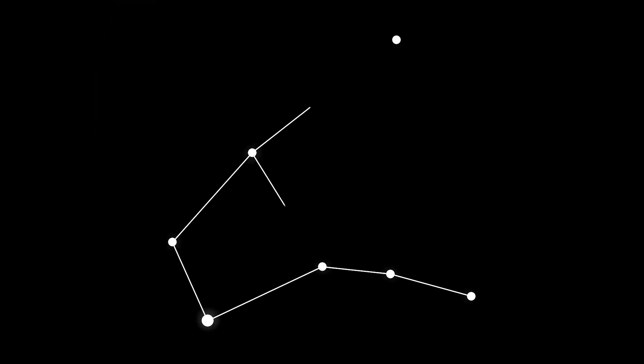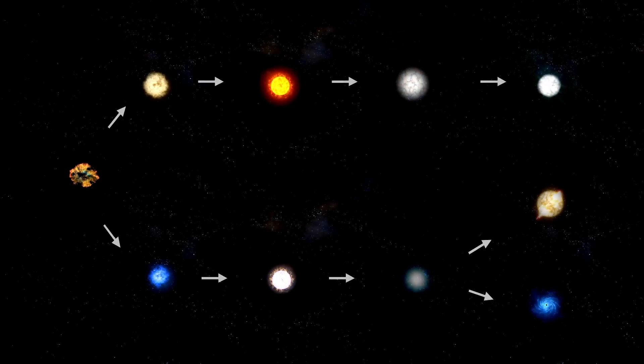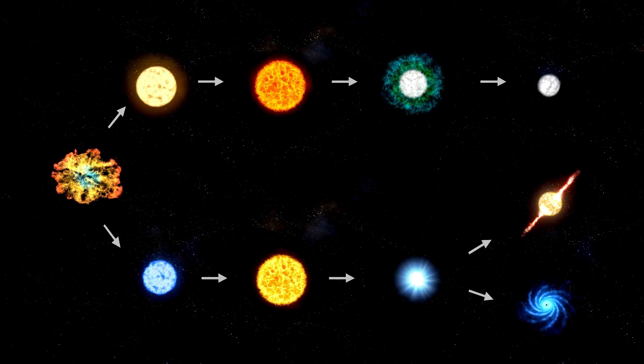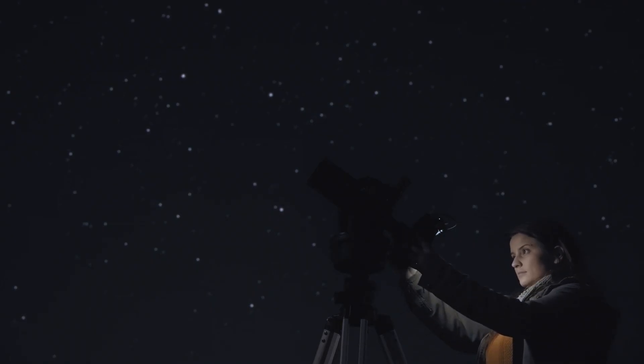As is the case with Betelgeuse, whose pulsations give us clues about what is happening inside it. This method provides a direct connection with the behavior of the star, facilitating the monitoring of its luminous variations.